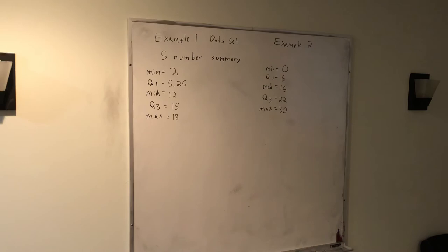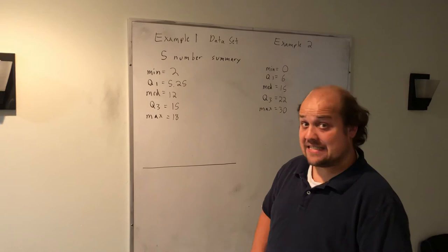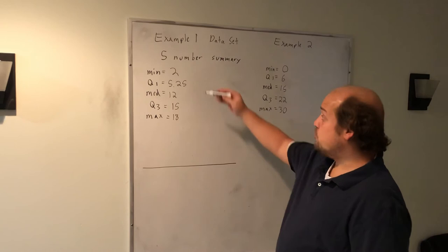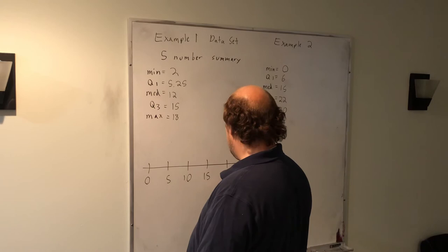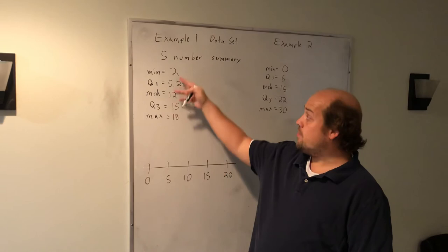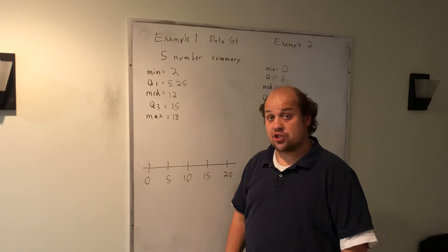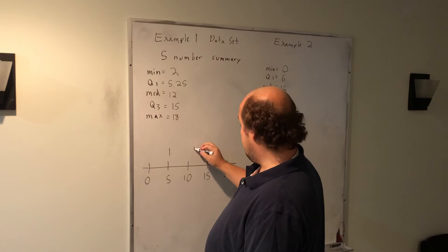So when I go to create my box plot from this 5 number summary, basically, I start by creating a scale along the bottom. I want this to be a consistent scale. I don't just want to choose the numbers that are in my 5 number summary. Instead, I want to look at the smallest number and the largest number and create a reasonable scale that would include both. So if I'm trying to go between 2 and 18, I'm going to start at 0 and go by 5s. 0, 5, 10, 15, 20. That way, the largest number on my scale is larger than the maximum. The smallest number on my scale is smaller than the minimum.